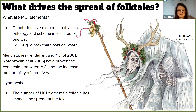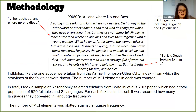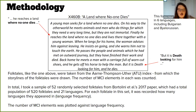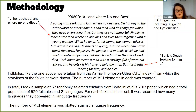I set out to test this in the following way. I drew folktales from something called the Arne Thompson Uther Index, which is a codex of Eurasian folktales that includes over a thousand tale types — tales of animals, tales of magic, and so on. I took a sample of 52 randomly selected folktales from a paper by Barcelona et al., which had a total population of 520 folktales across 21 languages, ranging geographically from the UK to the Middle East. For each folktale, it recorded how many languages they appeared in — the language frequency.